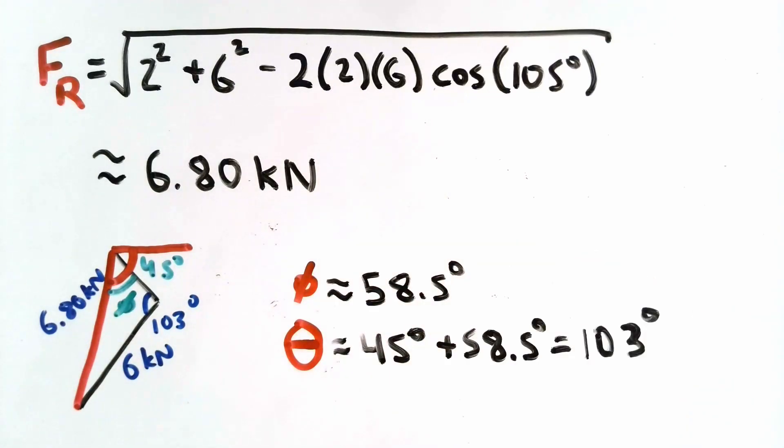Notice that I'm trying to be consistent in using three significant units for all of our answers. And there you have it. We found the magnitude of our resultant force vector, which was 6.8 kN, and we found the angle from the horizontal at which that resultant force acts, which would be 103 degrees.